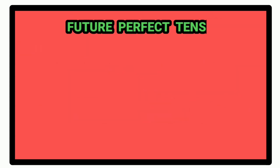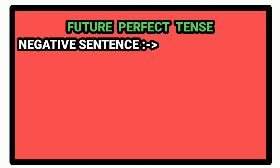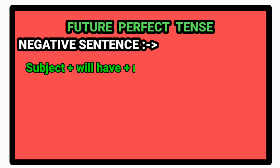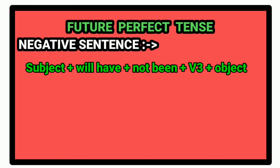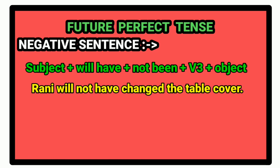Next is future perfect tense. Rule for making negative sentence is: first of all, we write subject. Then will, then have, not, been. Then past participle form of the verb. And then the object. For example, Rani will not have changed the table cover. The passive voice will be: the table cover will not have been changed by Rani.